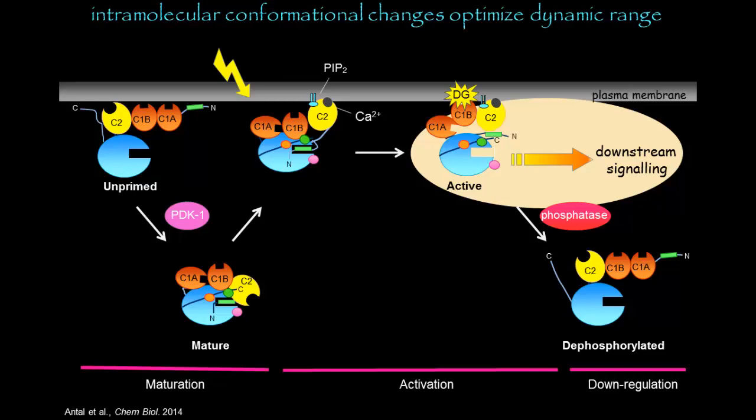What this shows is that there are intramolecular conformational changes that optimize the dynamic range of protein kinase C signaling. In this mature form of protein kinase C, shown at the bottom left of the slide, it's in a conformation where the accessibility of the C1 domains to diacylglycerol has been masked, and thus we do not have any basal signaling. By tuning the affinity of this C1 domain, we have an inability to bind diacylglycerol in the inactive conformation, but when we recruit it to the membrane and diacylglycerol is present, we achieve the full dynamic range of signaling.